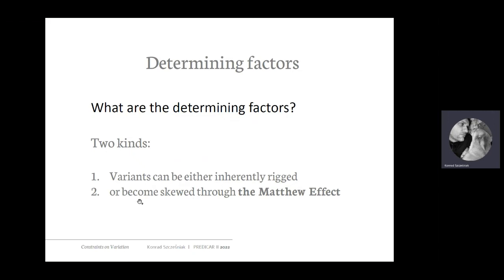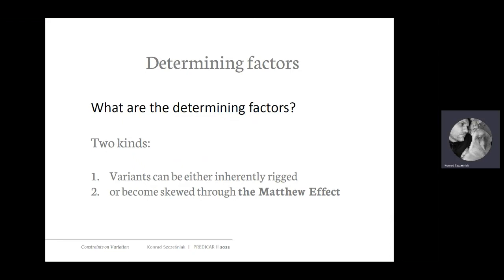Kind number one has to do with the fact that variants can be inherently rigged. If you take an expression, a grammatical construction, or a word that comes in two variants, one variant will be more frequent than the other because there is something about it that makes it more tempting or more attractive in usage. The other factor is at work when you start out with two variants that are not inherently rigged — they could each have equal chances of becoming more frequent — but one of them becomes more frequent through what is known as the Matthew effect.